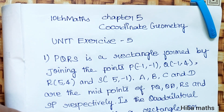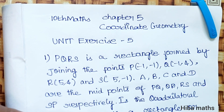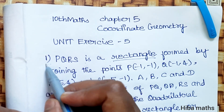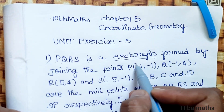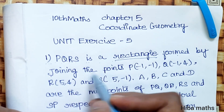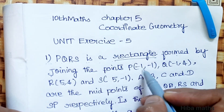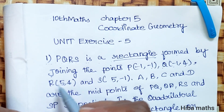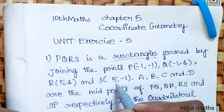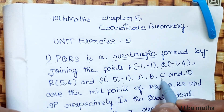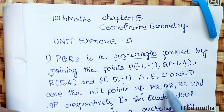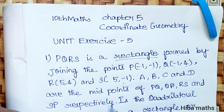Hello students, welcome to Hibamax 10 Standard Max Chapter 5 Coordinate Geometry Unit Exercise 5. First question: PQRS is a rectangle formed by joining the points P(-1, -1), Q(-1, 4), R(5, 4), and S(5, -1). A, B, C, D are the midpoints of PQ, QR, RS, and SP respectively.